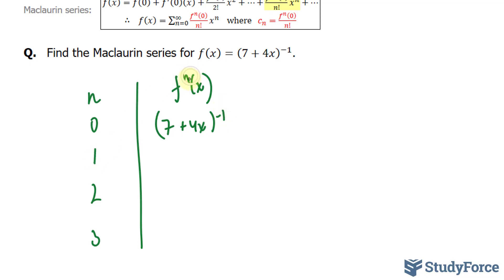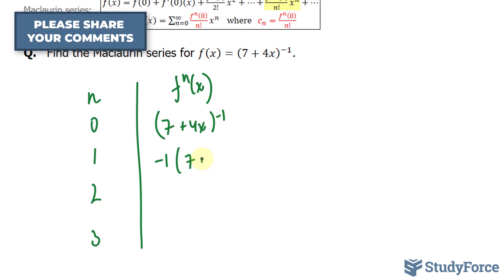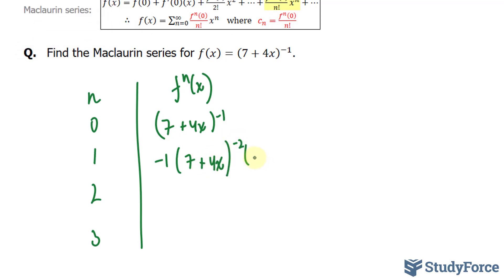If I substitute 1 into n, that means I have to take the first derivative. And the first derivative of this function is equal to negative 1 bracket 7 plus 4x raised to the power of negative 2 times 4. Of course, this will require some work to do, but I've done it ahead of time just to save some time.